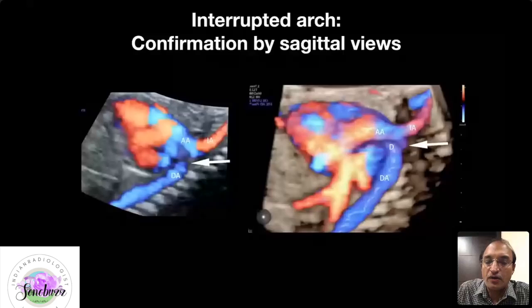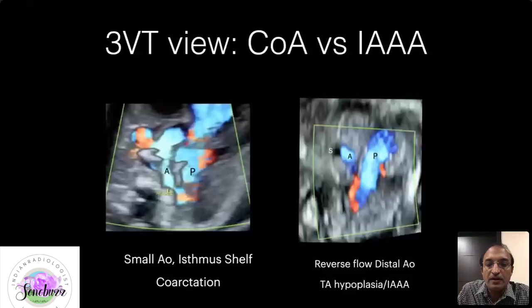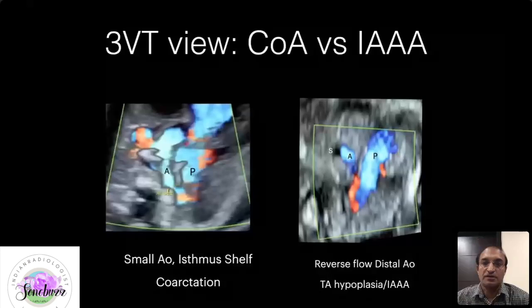In coarctation, the aorta is small within itself, while the classical feature of interruption is reverse flow — you see red flow on the aortic side because the aorta is not extending down, with retrograde flow through the ductus arteriosus. This second picture is very critical because it suggests the baby is going to be born with a severe critical circulation after birth.